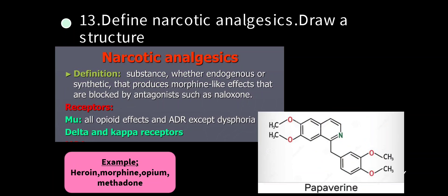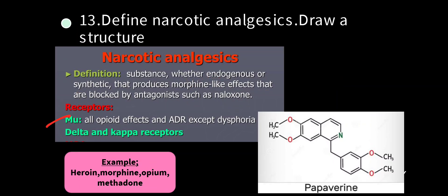Define narcotic analgesics and draw a structure. Narcotic analgesics are natural or synthetic substances that produce morphine-like effects, blocked by antagonists such as naloxone. They block mu receptors in the brain. The brain has three opioid receptors: mu, kappa, and delta. After blocking these receptors, the brain won't receive pain signals — hence the name analgesic, for treating severe pain. Examples: heroin, morphine, opium, methadone, and papaverine.